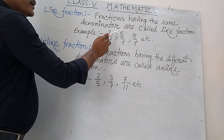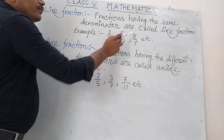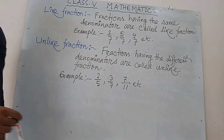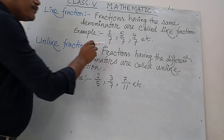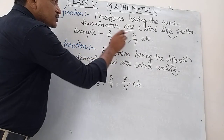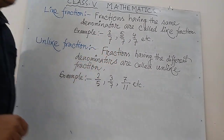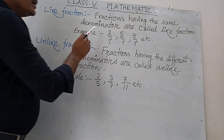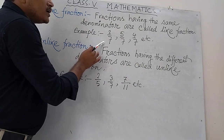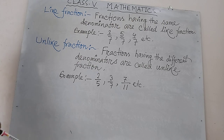Here the numerator is 2, here is 5, and here is 4. So these fractions are called like fractions because their denominators are the same.